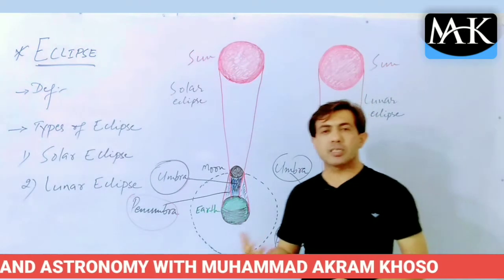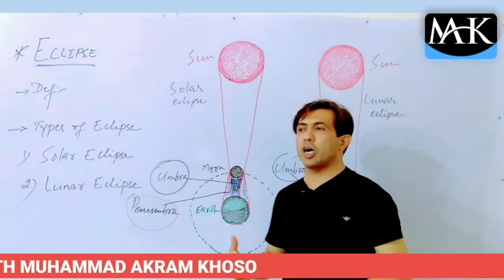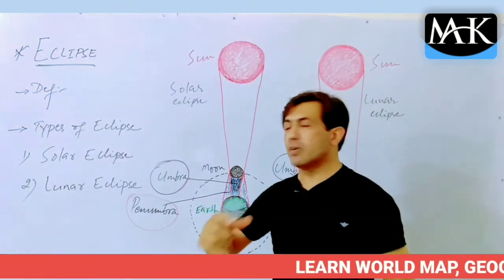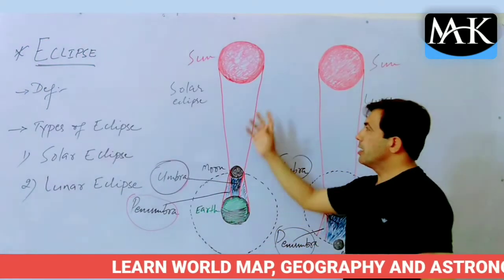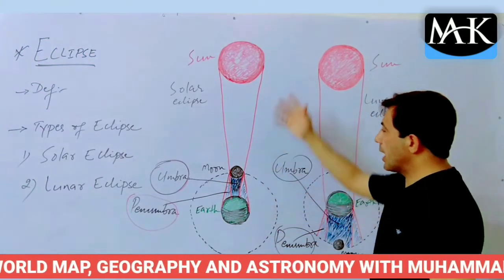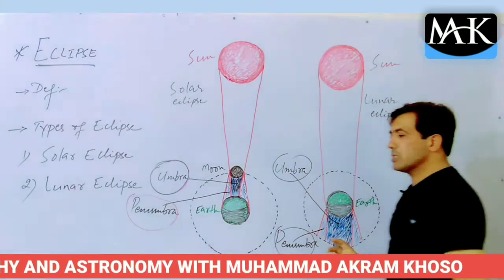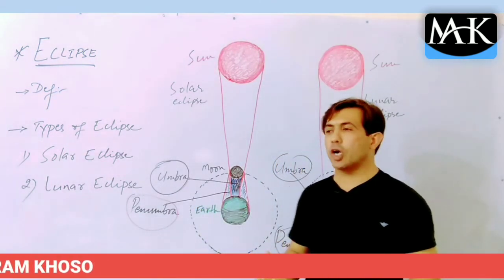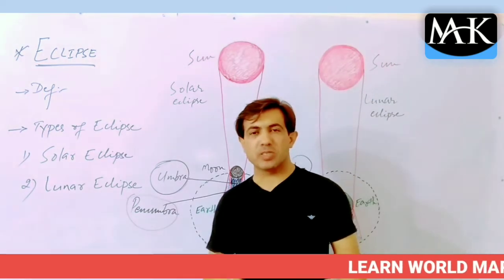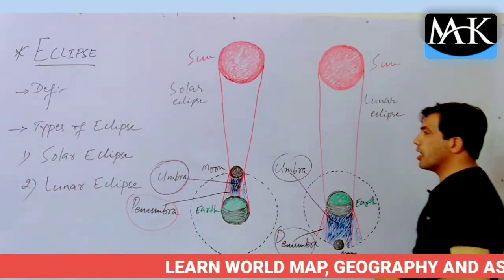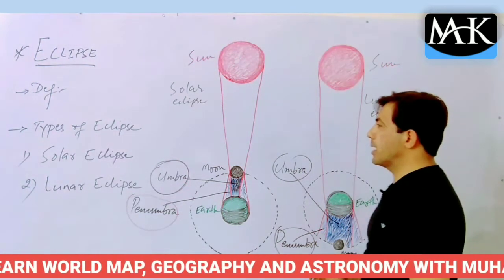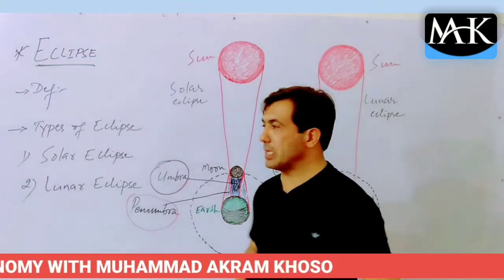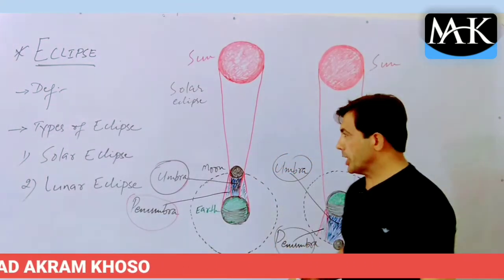This is a really important topic because in everyday science or general ability sections in CSS, PMS, and PCS exams, you can be asked in writing and descriptive answers how these eclipses happen, and diagrams must be drawn. Multiple choice questions frequently ask how solar eclipse and lunar eclipse occur.